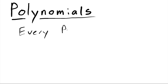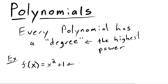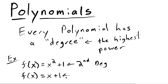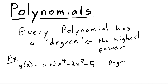Every polynomial has what's called a degree. In math, a degree just means the highest power in that polynomial. For example, if the highest power is two, the degree equals two — you can say it's a second degree polynomial. A linear equation is first degree because the highest power is an understood one. For a more complicated polynomial, we're just looking for the highest power — if that's seven, it's a seventh degree polynomial.